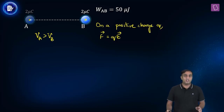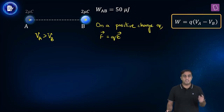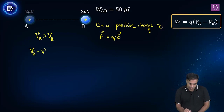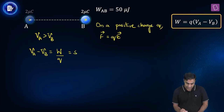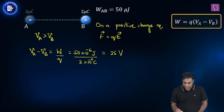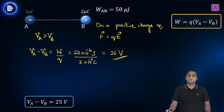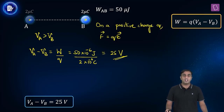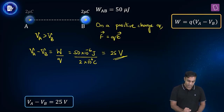Now that we have figured out that VA is greater than VB, let's find the potential difference between point A and point B. The equation connecting work done by the electric force, the charge, and the potential difference comes to our help. We need to find VA minus VB, which is work done by electric force divided by the charge — 50 microjoule divided by 2 microcoulomb — which gives 25 volt as your answer. So the potential difference is 25 volt and point A is at the higher electric potential.